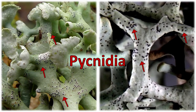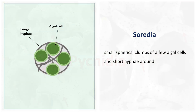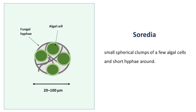To the naked eye, pycnidia often appear as black dots or clusters on the thallus surface. Another means of reproduction of lichens is soredia. Soredia are small, spherical clumps of a few algal cells wrapped around bifungal hyphae. The size of soredia varies between 20 and 100 micrometers, depending on the lichen species, and it is one of the most common means of reproduction in many lichens.